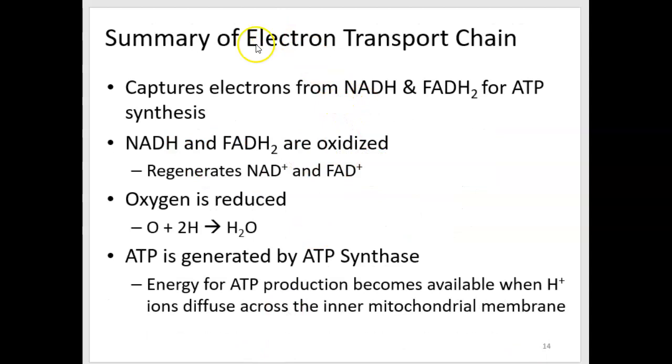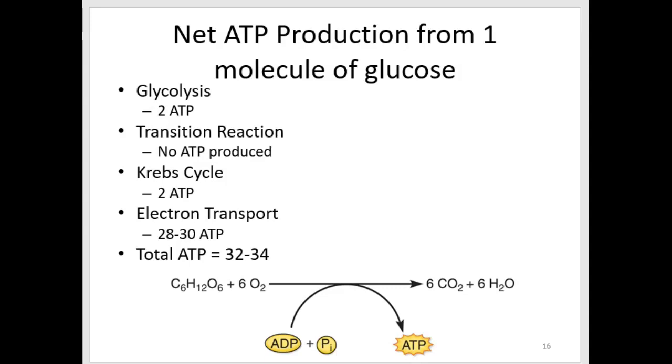The summary of the electron transport chain is that it captures electrons to fuel the diffusion of hydrogen. First the pumping of hydrogen, and then the diffusion of hydrogen, all in order to generate ATP by ATP synthase. Water is produced, and a nice side effect is that the NADH loses the hydrogen. So NAD+ is regenerated, and it can accept another electron.